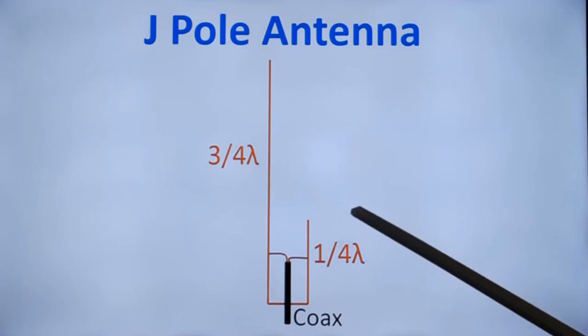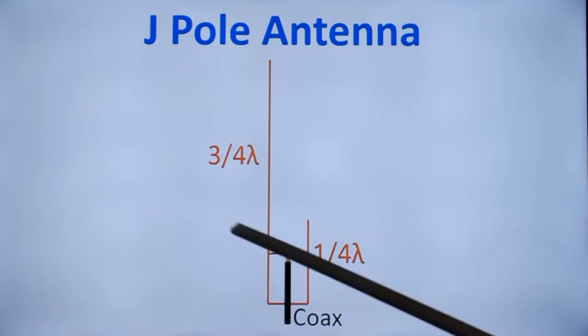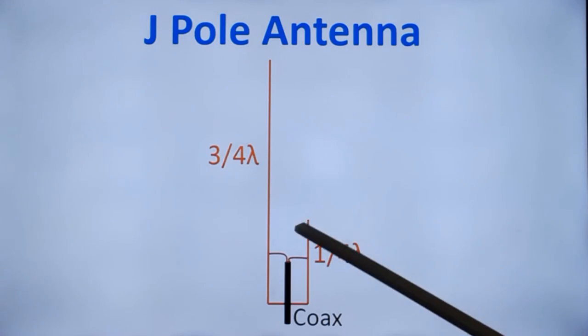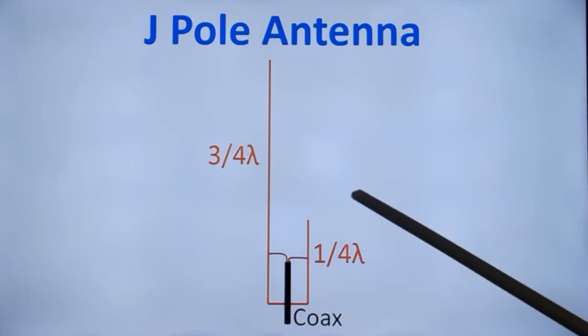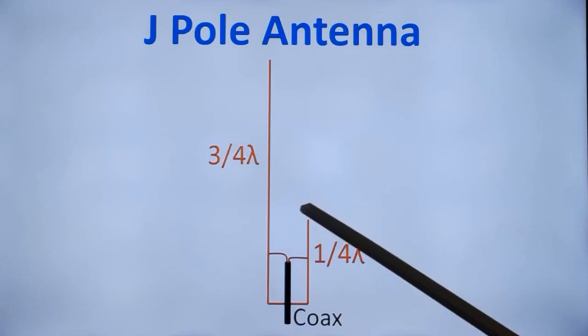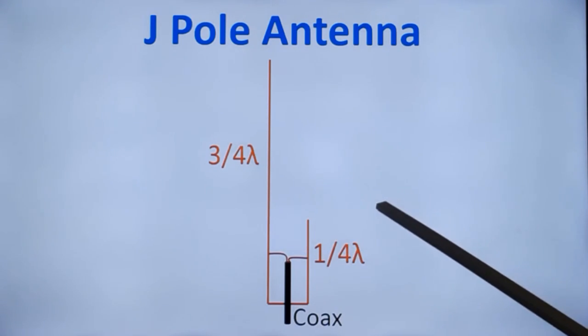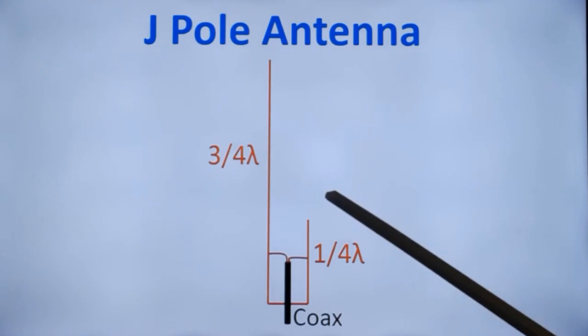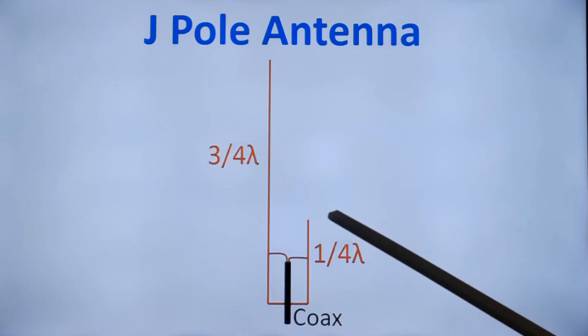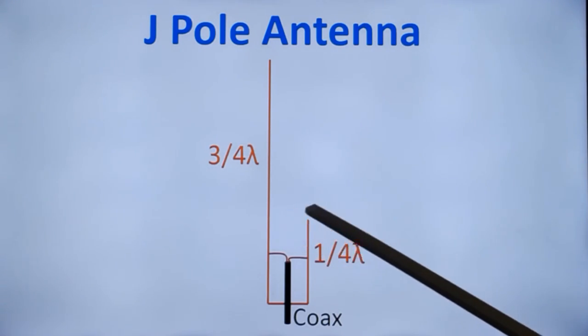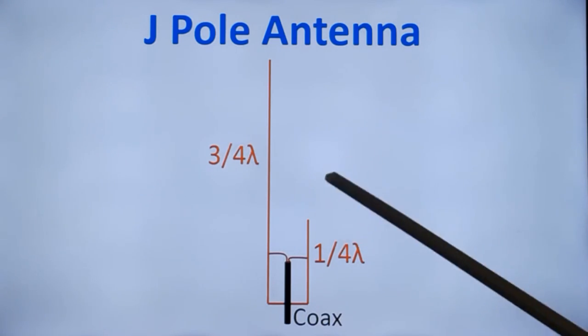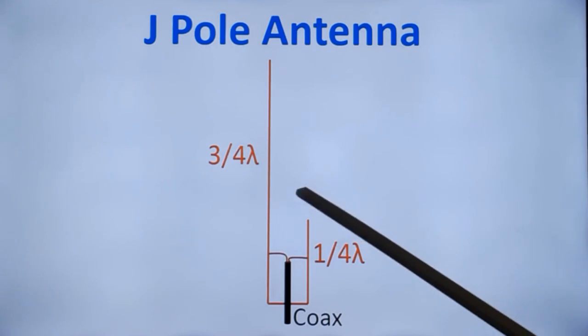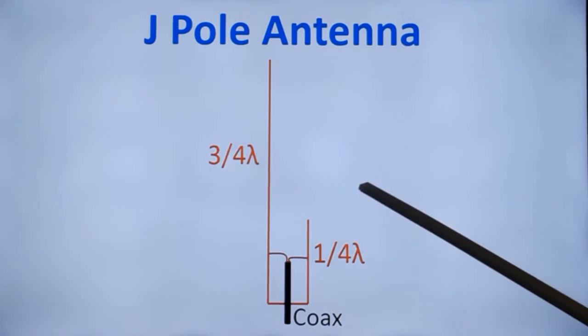And it is also mentioned that when you use 2m J pole for 70cm, the angle of radiation is not ideal for terrestrial repeaters or terrestrial communication but it is okay for satellite communication. A slightly different angle of radiation directed towards the satellite is there compared to that of the terrestrial repeaters. So a single J pole antenna on 2m has been successfully used for satellite communication for the cross band repeater.